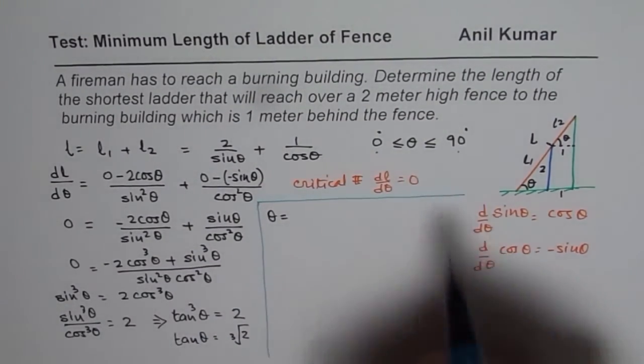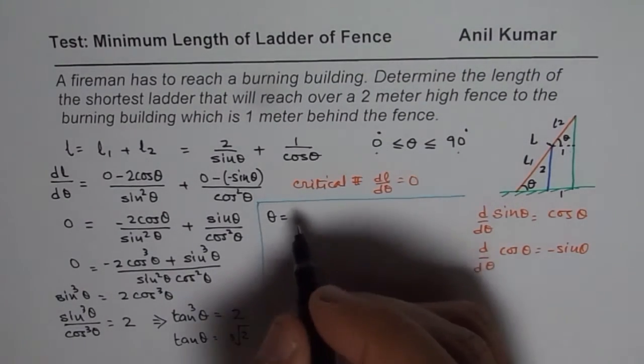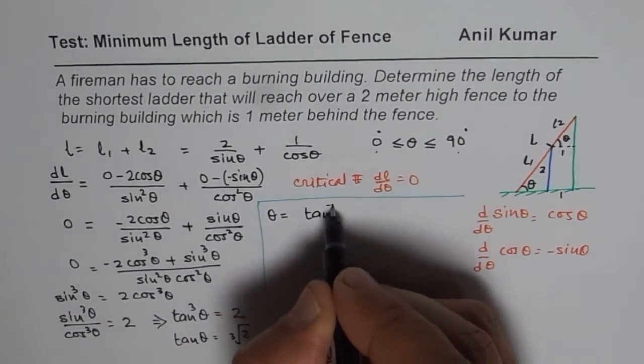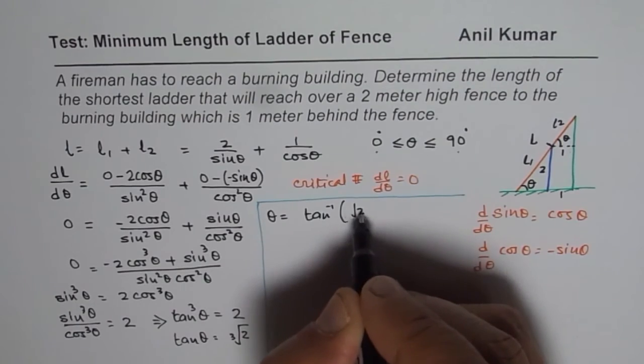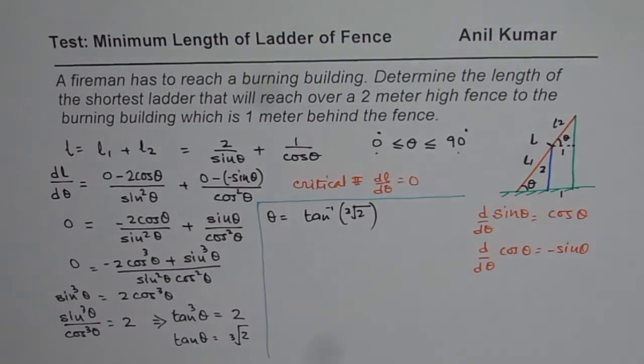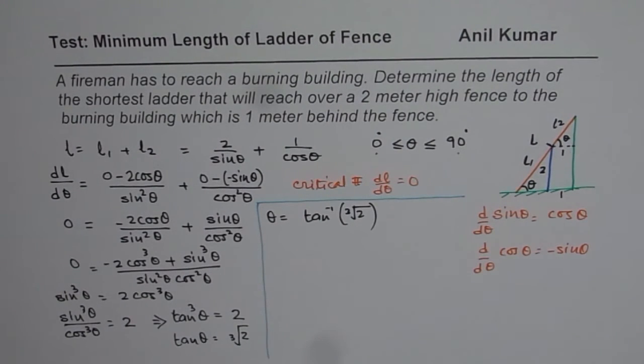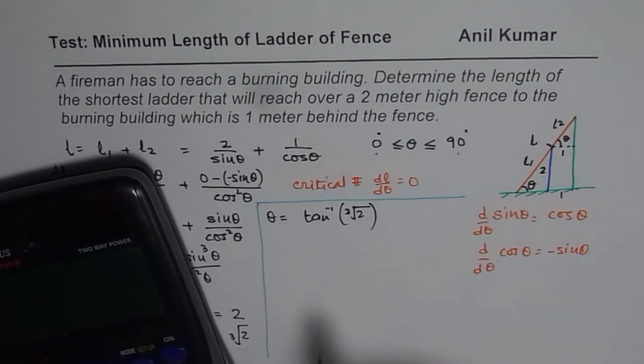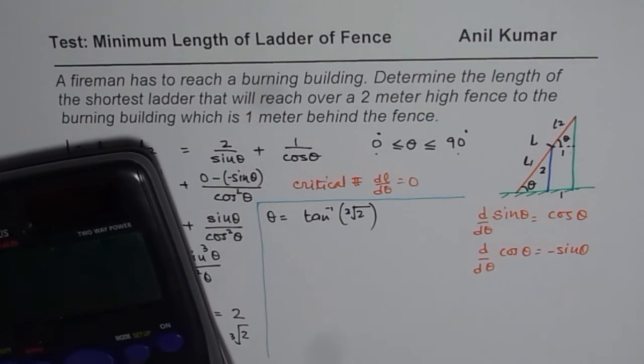Now from here we get theta equals to, so let me use this side now. So theta equals to tan inverse of cube root of 2. So that is the answer. So let us find cube root of 2. You can find this answer in degrees or in radians. Now let us find it in degrees in this particular case.